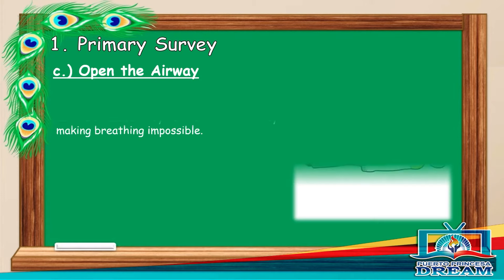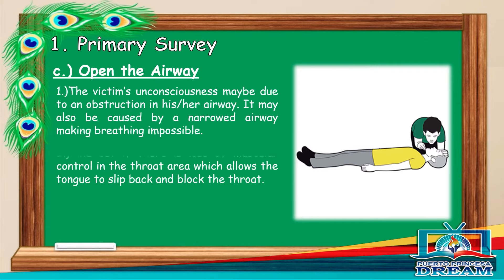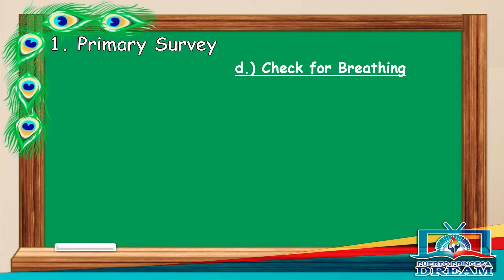Open the airway. The victim's unconsciousness may be due to an obstruction in his or her airway. It may also be caused by a narrowed airway making breathing impossible. Find out if there is a loss of muscular control in the throat area which allows the tongue to slip back and block the throat. Lift the chin and tilt the head of the victim to lift the tongue from the back of the throat, leaving the airway clear.